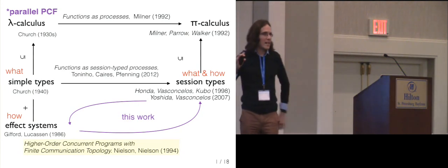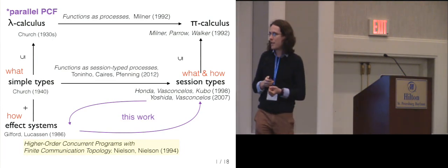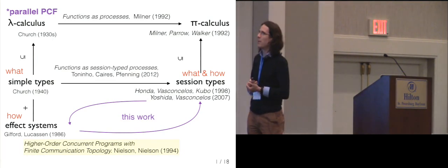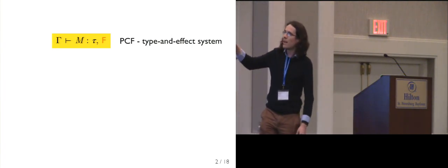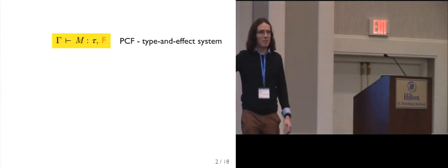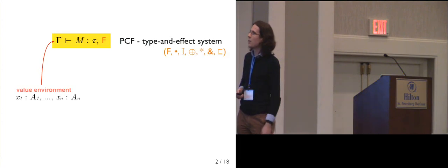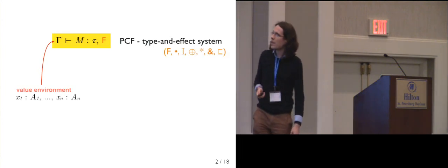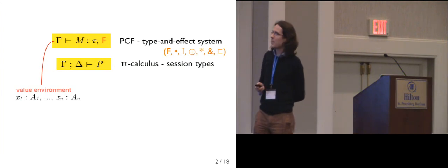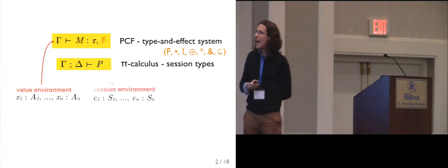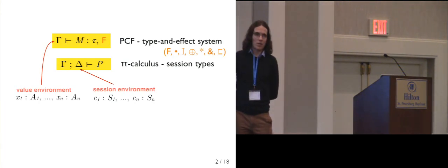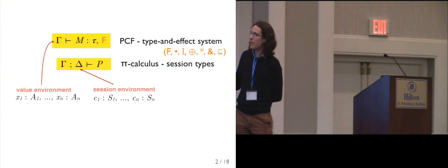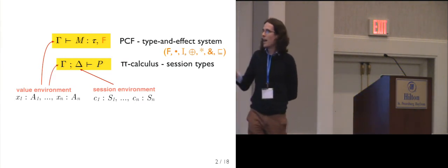I'll give you some details and hints of how that works and the flavor of it today, but there are lots of details in the paper. We have two type systems: PCF type and effect systems of the form where you have some term M of type tau that can produce some effects described by F in some value context, with a rich algebraic structure. The pi calculus has a process P, and session typing adds an environment describing the behavior of that process along channels — mapping channels to their session type and also a value environment.